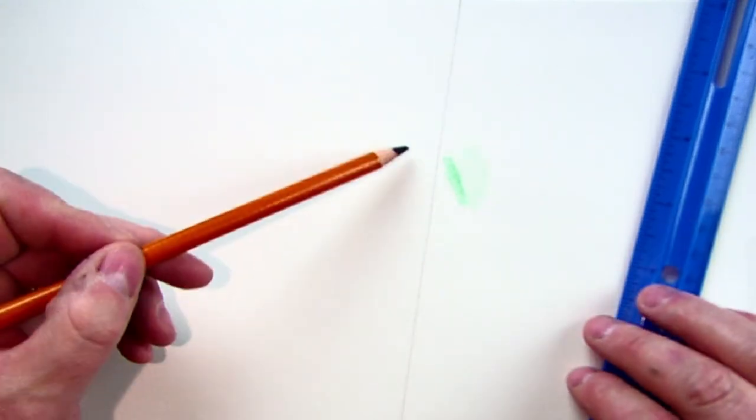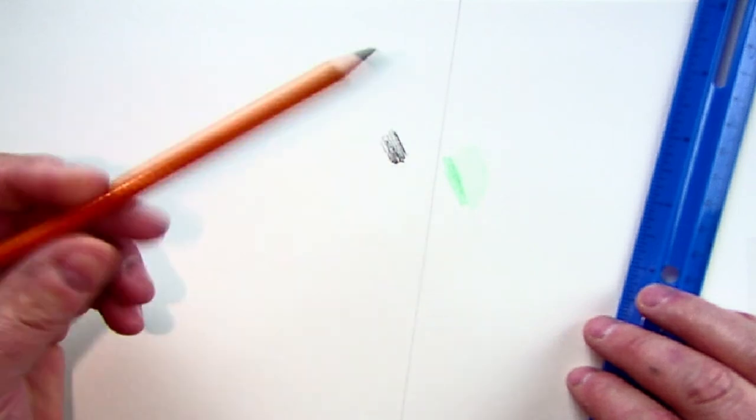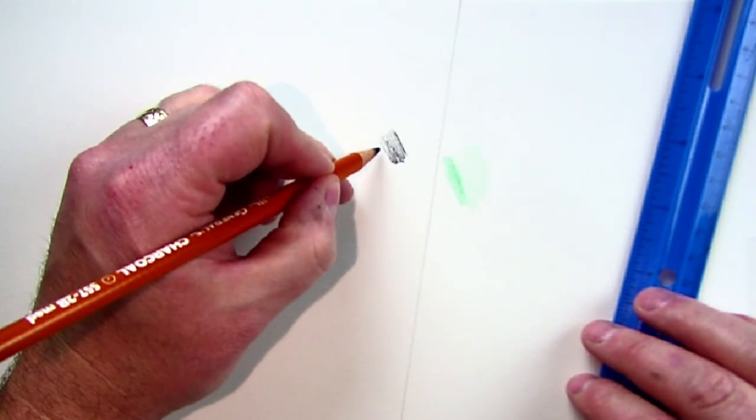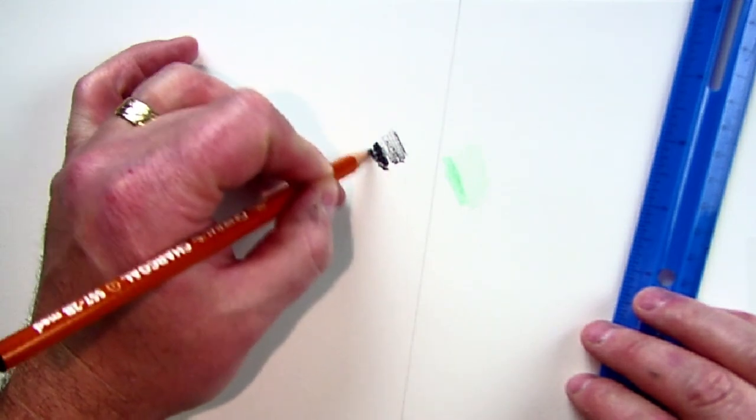Same with the charcoal pencil. That way you can get a little bit lighter instead of the same traditional style, the regular style, coming down and pressing down, and it's going to be darker.